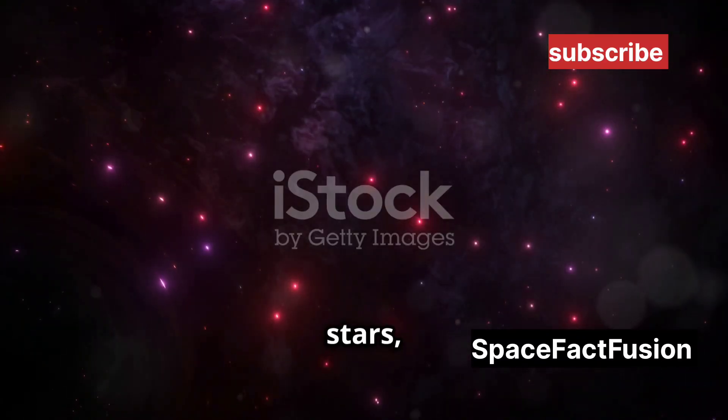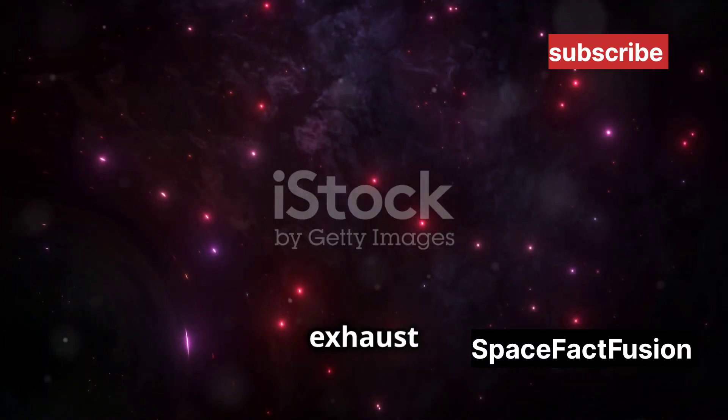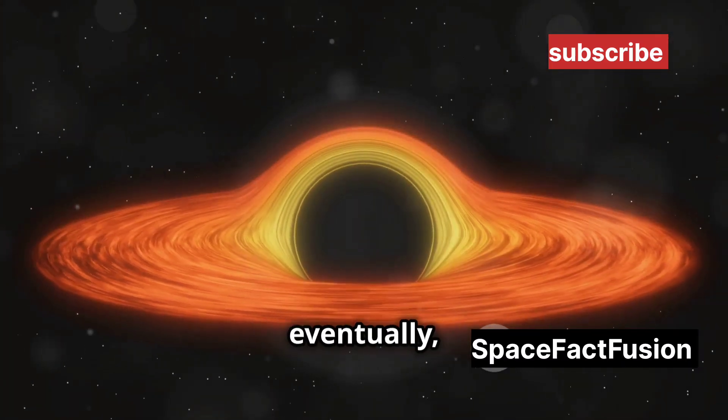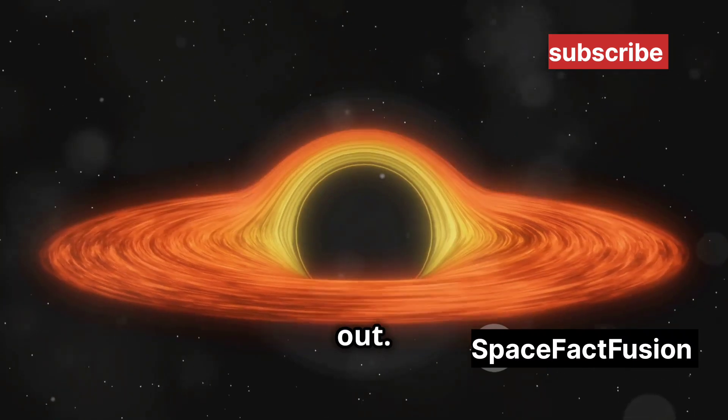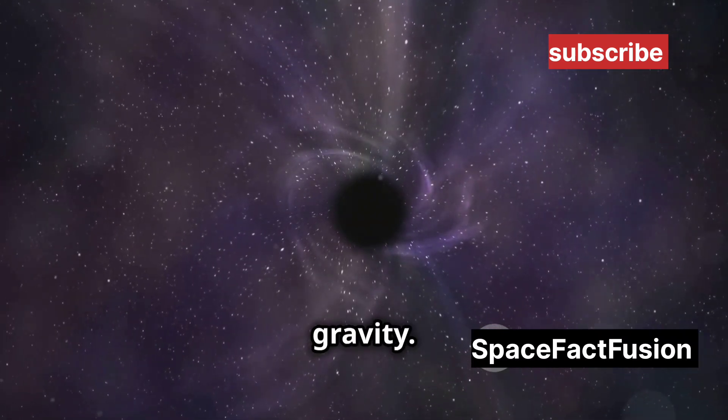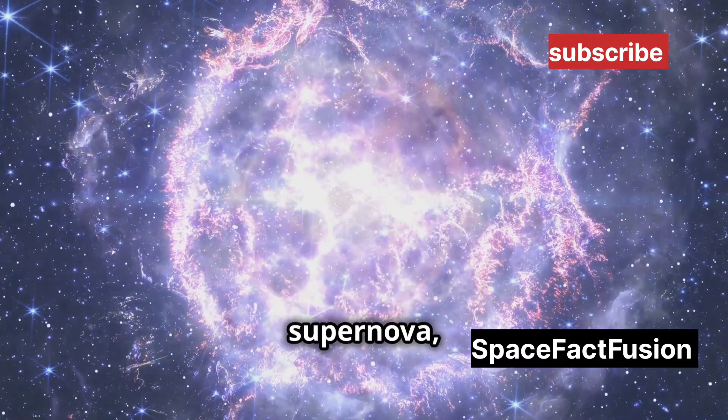Black holes aren't eternal—they have a beginning. They form when massive stars, much larger than our Sun, exhaust their nuclear fuel. This fuel is what keeps stars shining, but eventually it runs out. The star's core collapses under its own immense gravity. This collapse triggers a supernova, a spectacular explosion that can outshine an entire galaxy.